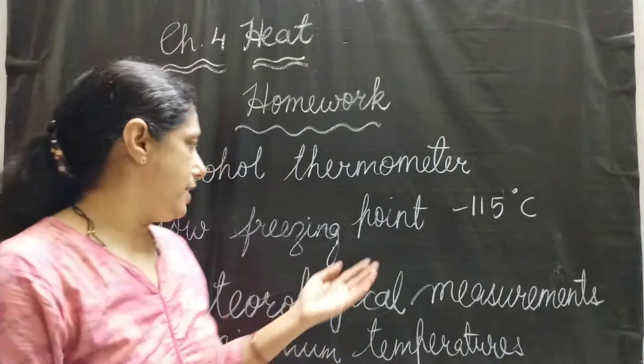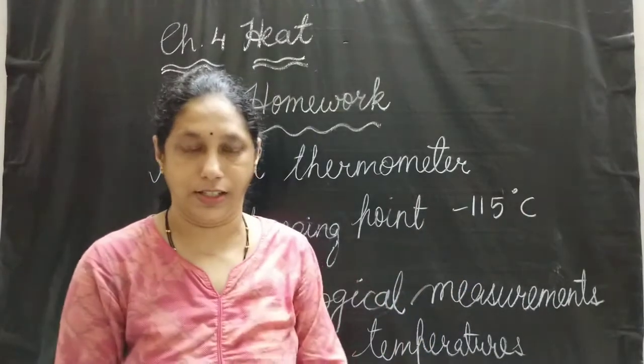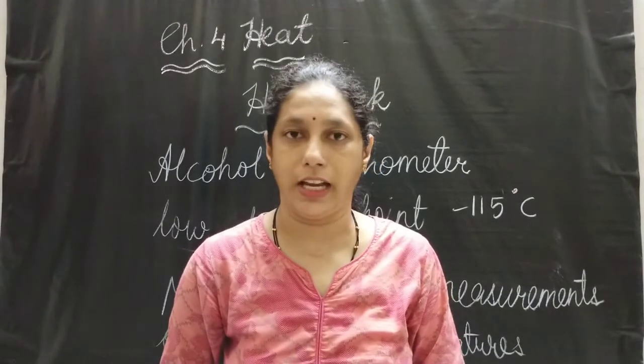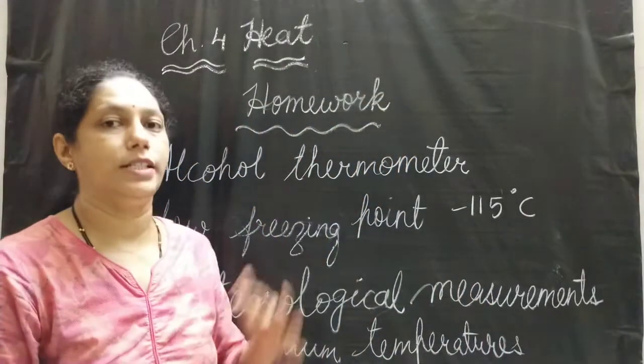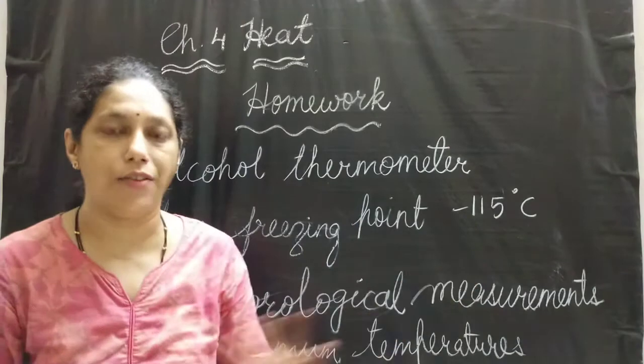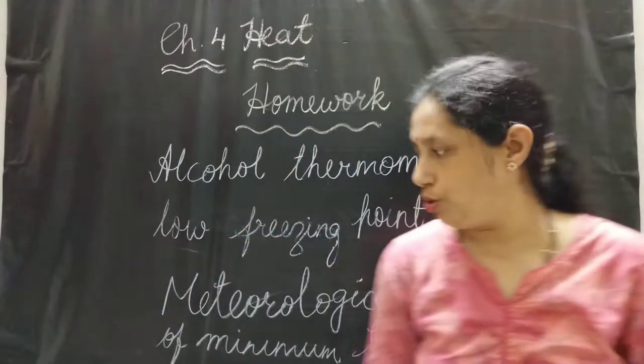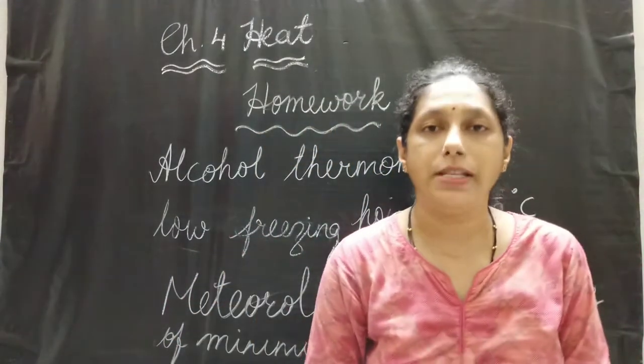Alcohol has a very low freezing point, that is minus 115 degree Celsius. As we know, the freezing point of mercury is minus 39 degree Celsius, so it has a limitation — it cannot measure temperature below that. To measure temperature below minus 39 degree Celsius, alcohol thermometers are used. Generally, alcohol is used for meteorological measurements where minimum temperatures need to be measured.